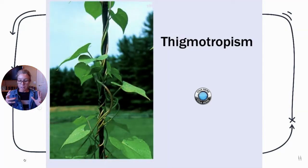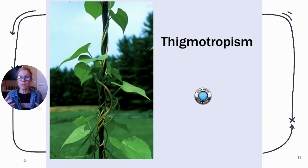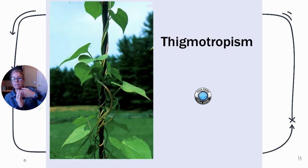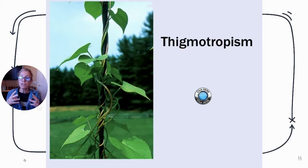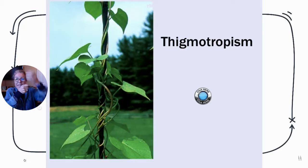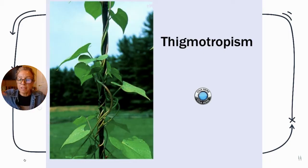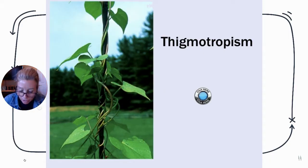Thigmotropism is a response to contact with another object, which can cause a plant to wind around a support pole. You can see how that would be advantageous — if you don't have a lot of secondarily thickened walls, you hang onto something to allow you to get up higher than other plants, exposing your leaves to the sun.